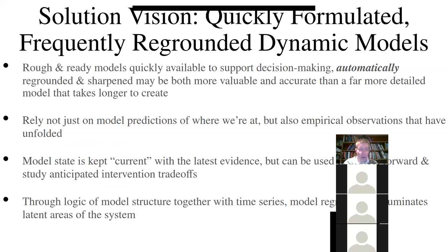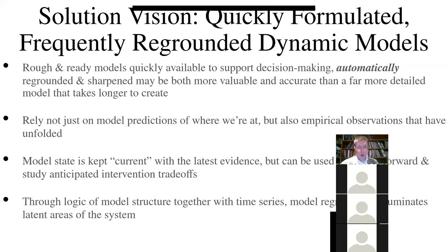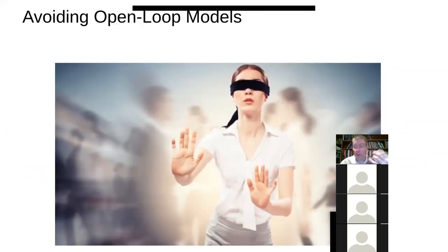The vision we came up with years back — this is 2014, 2015, when we were really pioneering this work — was this idea of having models that we can formulate quickly, like really early in an outbreak. For COVID-19, we started our models in February, and by early March we had a stable of models that were pretty good, including a particle filtering model. The idea is we'll have these models, they'll be roughly put together, but over time they'll be sharpened, regrounded, kept honest, kept corrected by virtue of data that comes in — kept current with the latest evidence in a way that keeps them relevant and ever more savvy to the external situation.